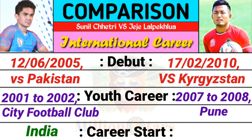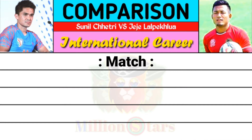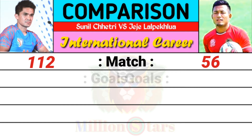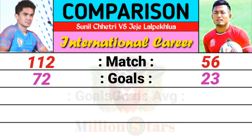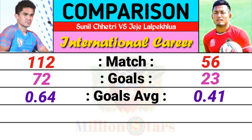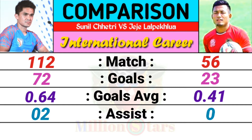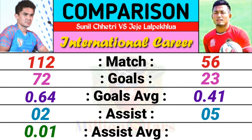Career start: Sunil India under-19, and JJ India under-19. International matches played: Sunil 112 matches played, JJ is 56 matches. Sunil scored total goals 72, JJ scored total goals 23. Sunil goals average is 0.64, JJ goals average is 0.41. Assists: Sunil assist is 2, JJ assist 5. Assist average: Sunil is 0.01 and JJ is 0.08.